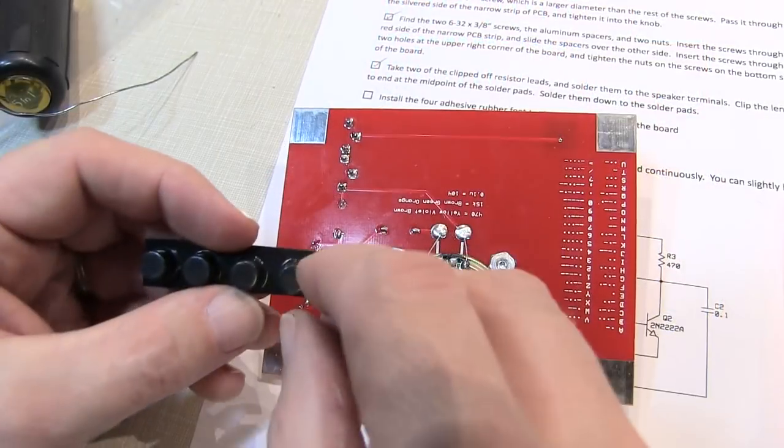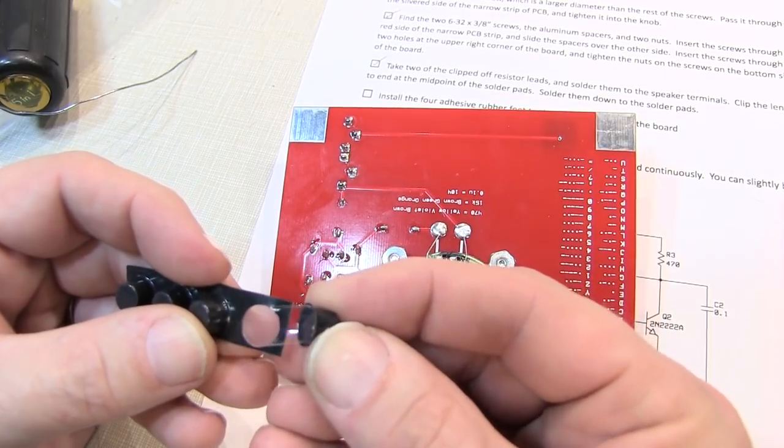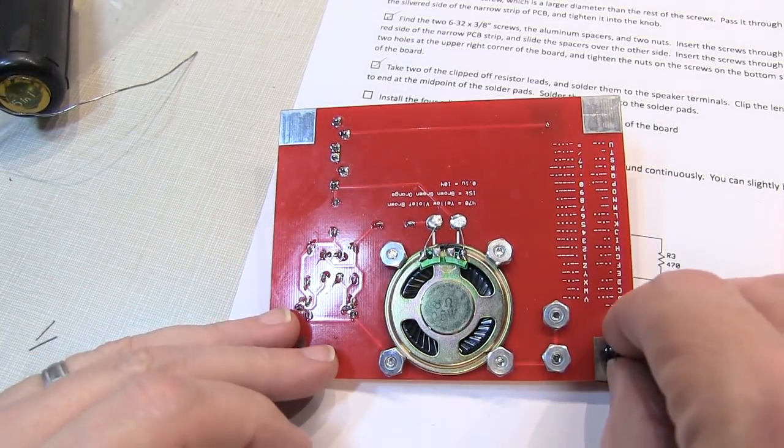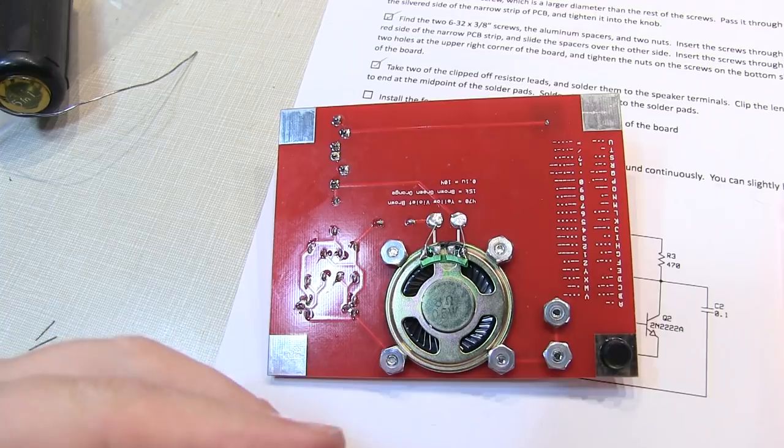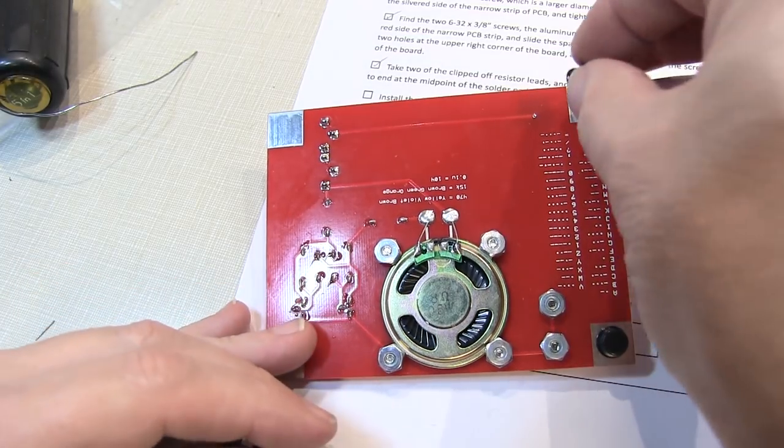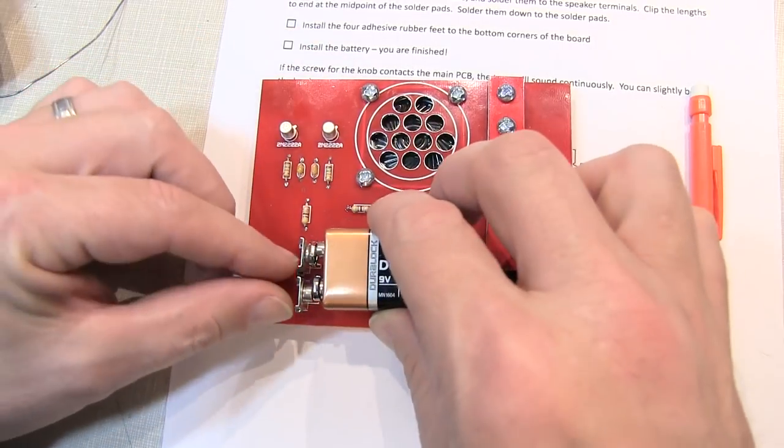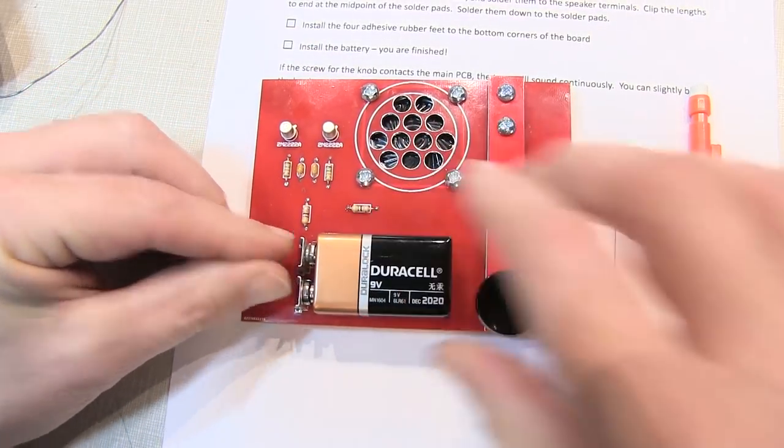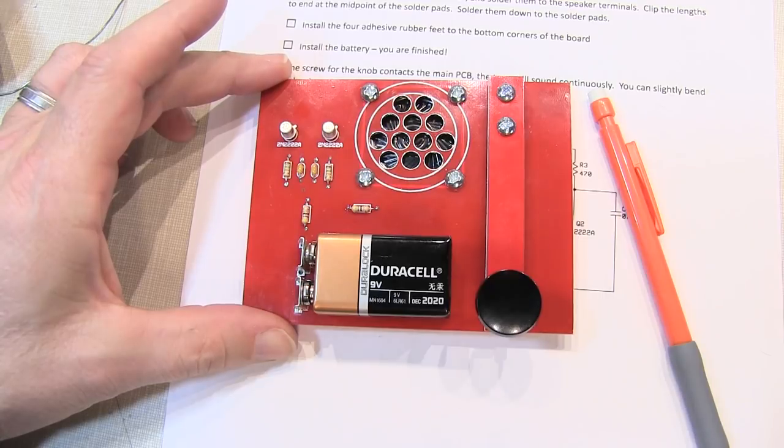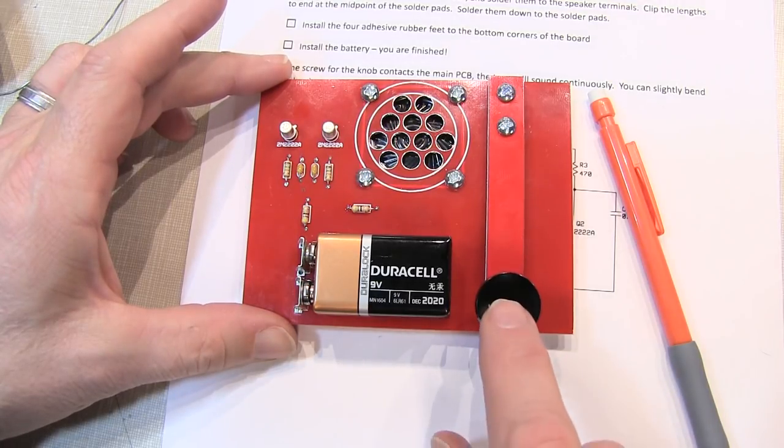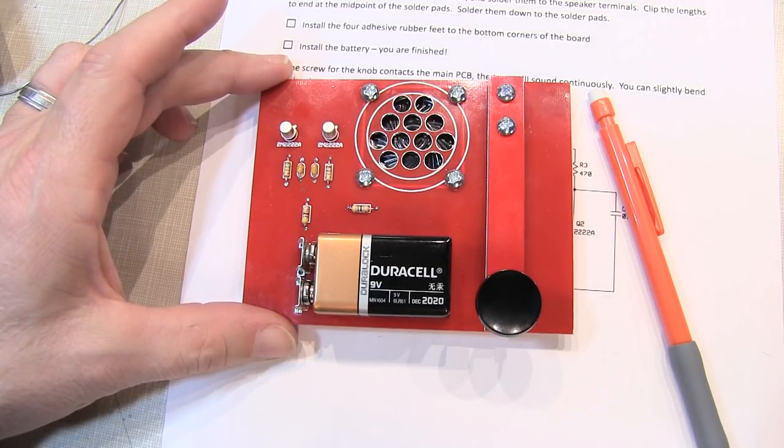Okay, almost done. We simply take the four adhesive rubber feet and stick them to the four corners of the board. Flip the board over, slide on your nine volt battery and lo and behold you've made yourself a super simple Morse code practice oscillator. Congratulations!